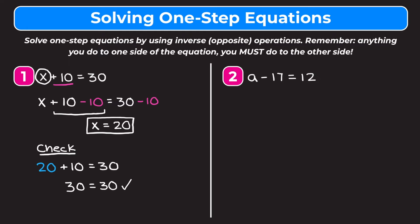In example 2 we have a minus 17 is equal to 12, so we're subtracting 17 from a. To get rid of the minus 17 we use the inverse operation — the inverse of subtraction is addition — so we add 17 to the left side of the equation. Anything we do to one side we have to do to the other, so we add 17 to the right side as well. Minus 17 and plus 17 go to 0, leaving a on the left, and 12 plus 17 gives us 29, so a equals 29.